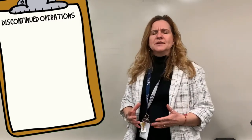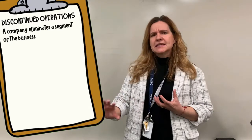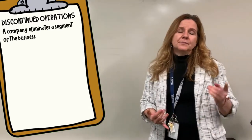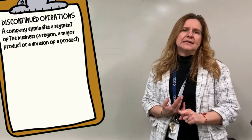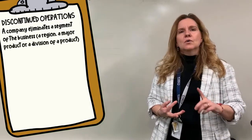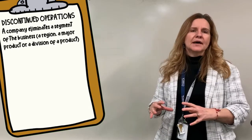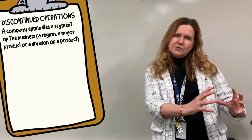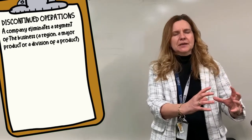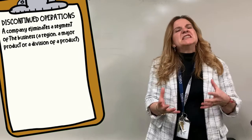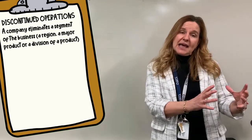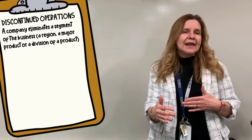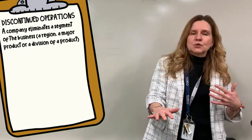A discontinued operation is when a company is eliminating a segment. An example of a segment would be a region, a major product, or a major division of a product. The segment being eliminated requires us to separate the revenue, expense, and assets related to that segment. The reason for eliminating it has to be strategic — maybe that segment had losses, or maybe they're shifting strategy and moving away from certain products.